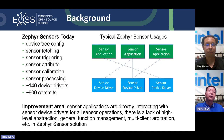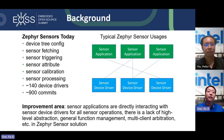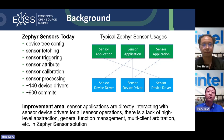Here is the background. Zephyr today already has a sensor solution based on device tree config. It supports developers in building sensor device drivers with many sensing features like sensing fetching, triggering, attribute, calibration, and processing. There are already 140 device drivers in the Zephyr repo with more than 900 commits. The typical sensor usage today is that Zephyr applications directly call the sensor device driver and stream the data, configuring the sensor in different working modes.